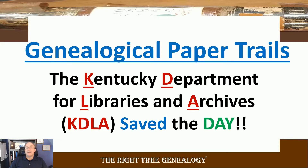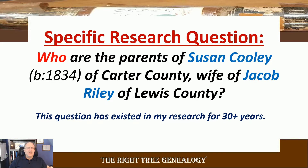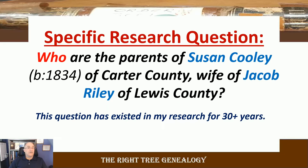Most states have records you can check to find what you're looking for. The specific research question that has driven me for years is: who are the parents of Susan Cooley, born 1834 in Carter County, and wife of Jacob Riley of Lewis County? Those are my mom's great-grandparents. I've researched tax records, census records, and marriage records, and one surname combination that intrigued me is the marriage of John Cooley and Nancy Sarton on March 3rd, 1832. That falls in line — they could be Susan's parents since she was born about 1834.